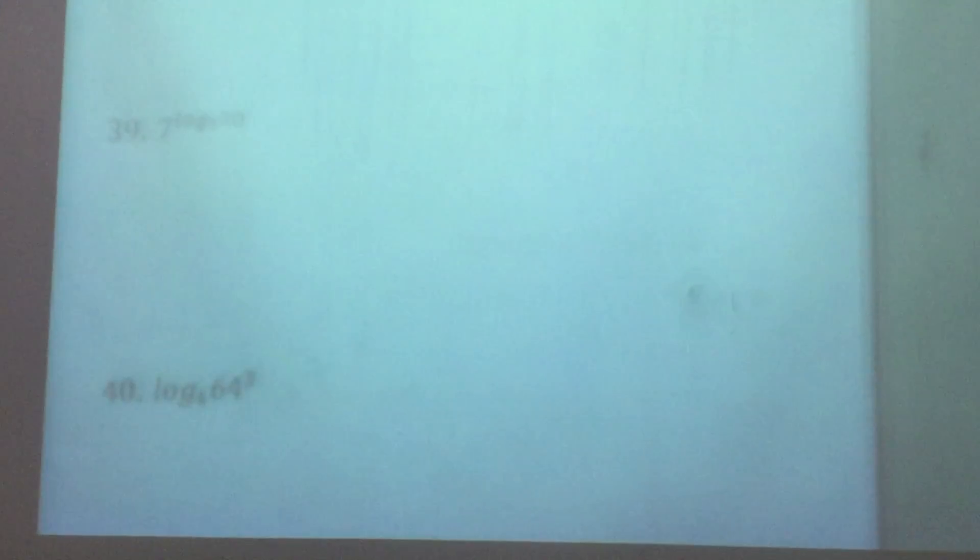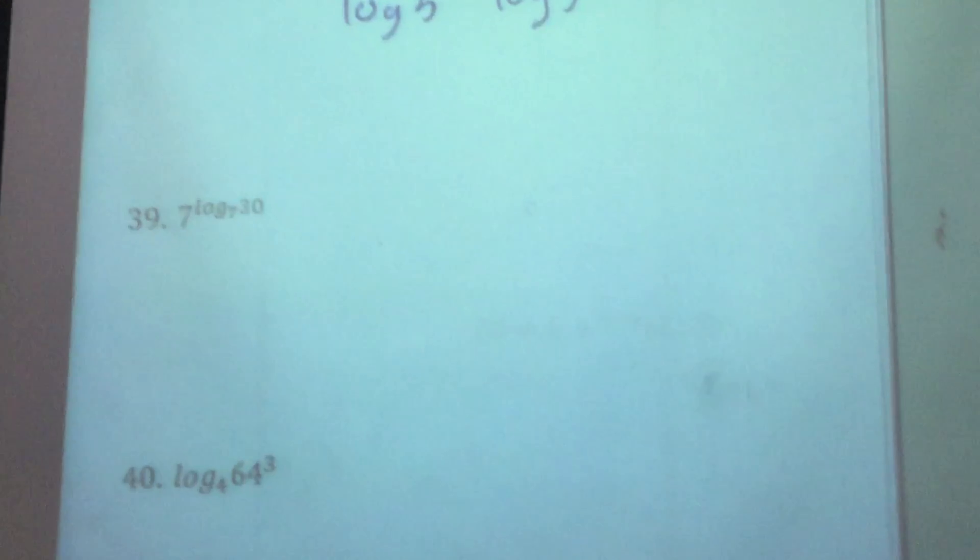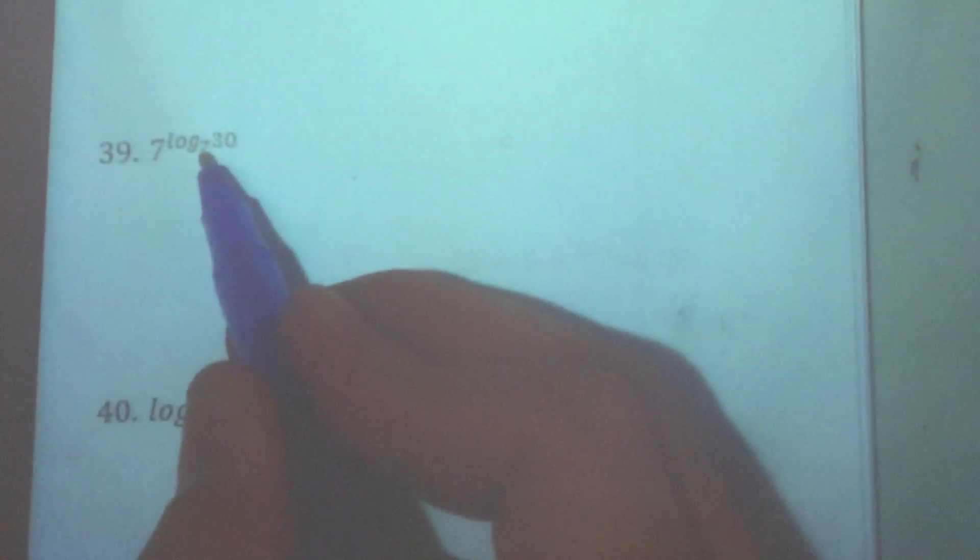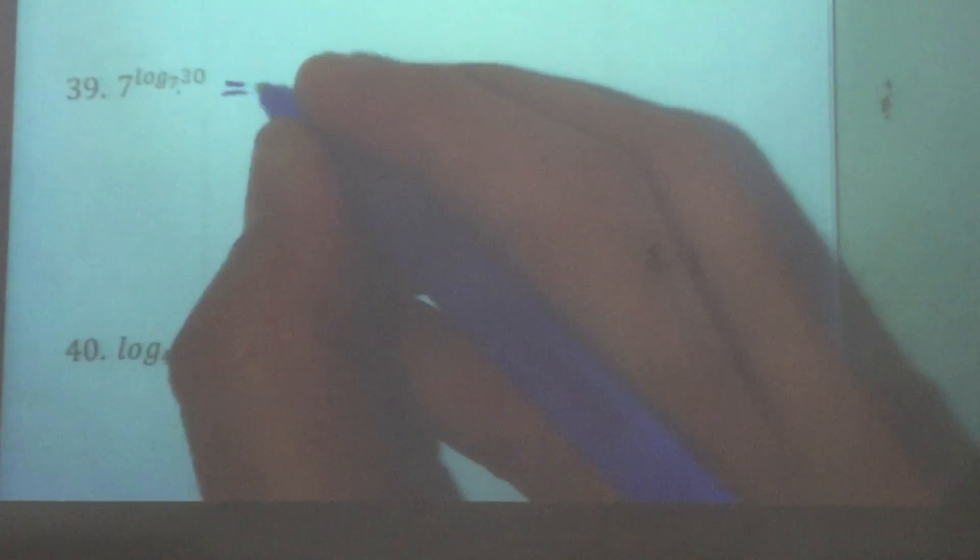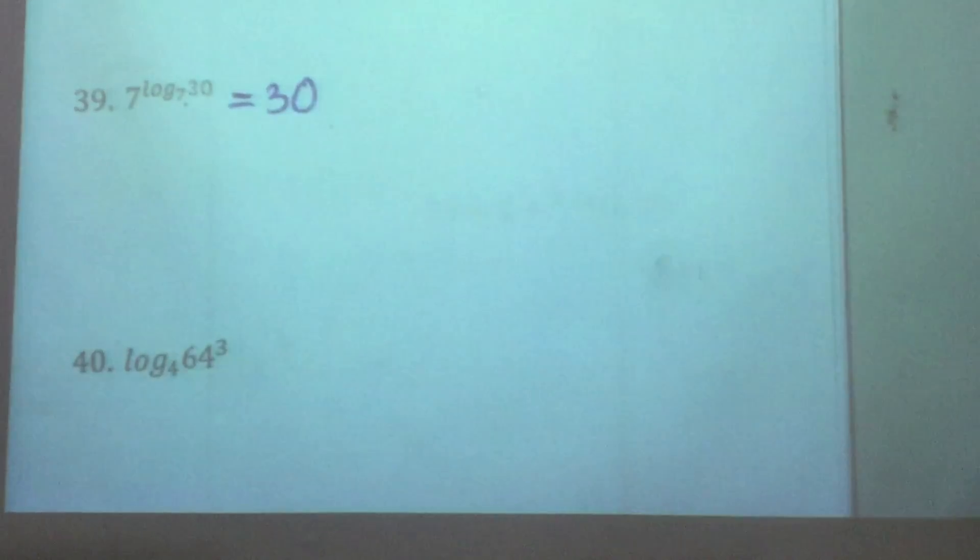39. 7 to the power of log base 7 of 30. Once again, notice that the base of the power and the base of the log here that is in the exponent match. When that happens, the answer is simply whatever the argument is there, which is 30. That's it for that one.